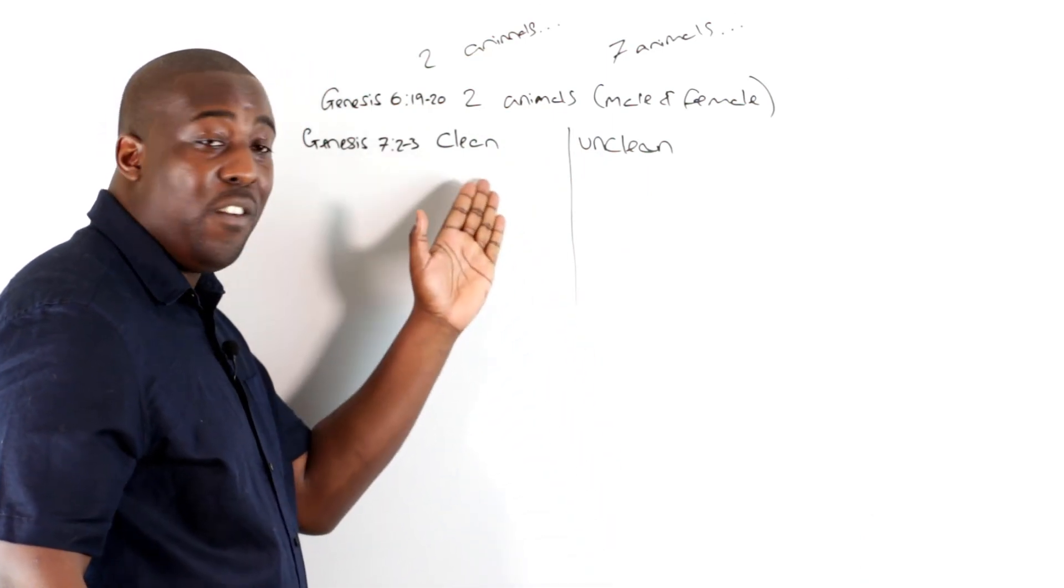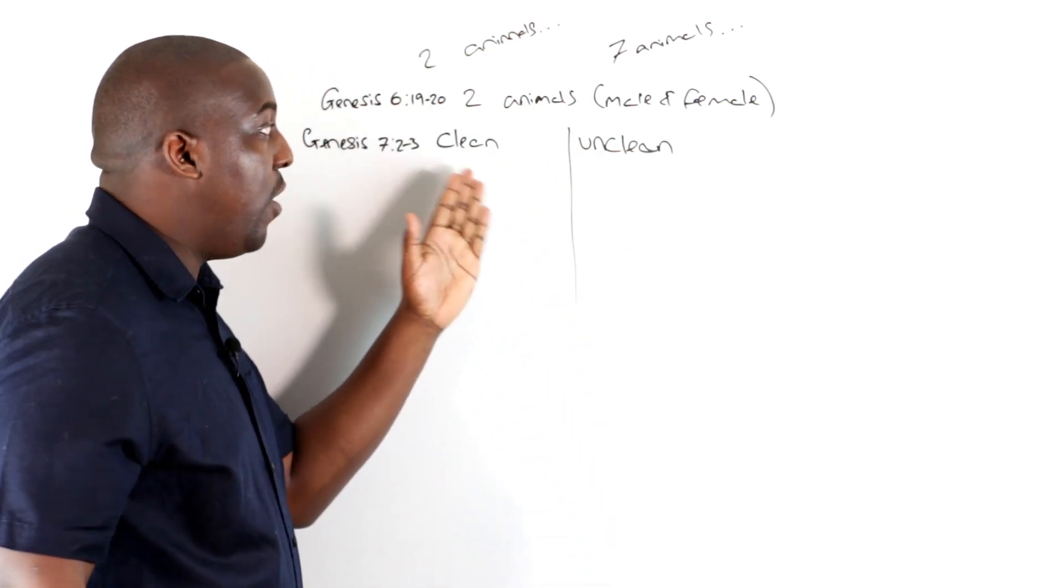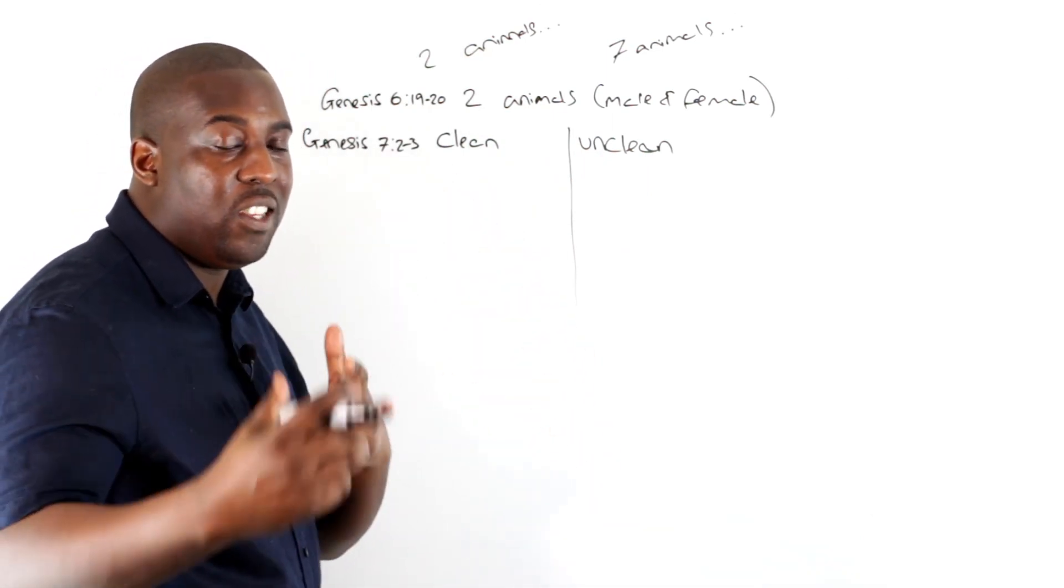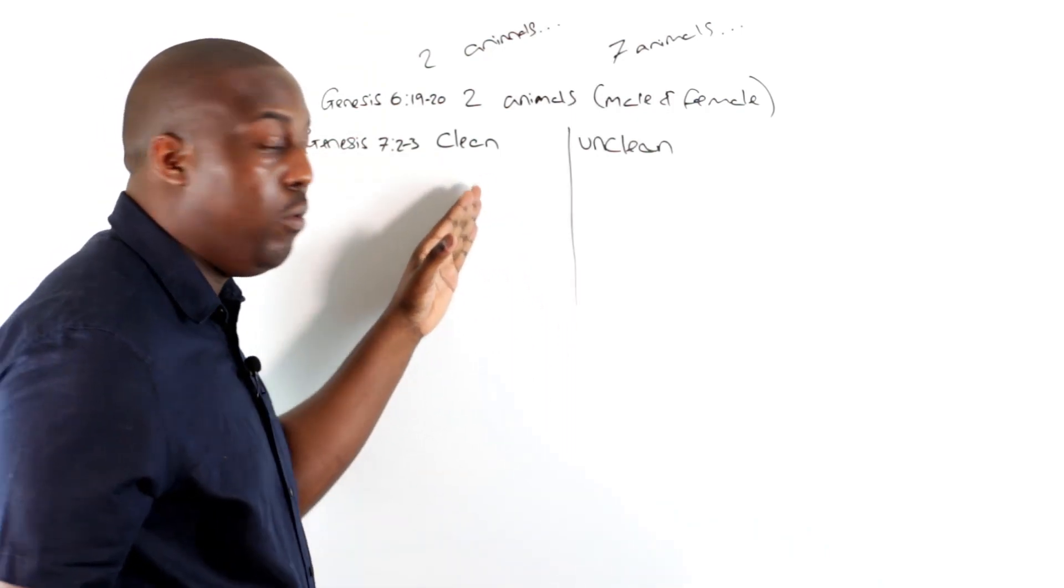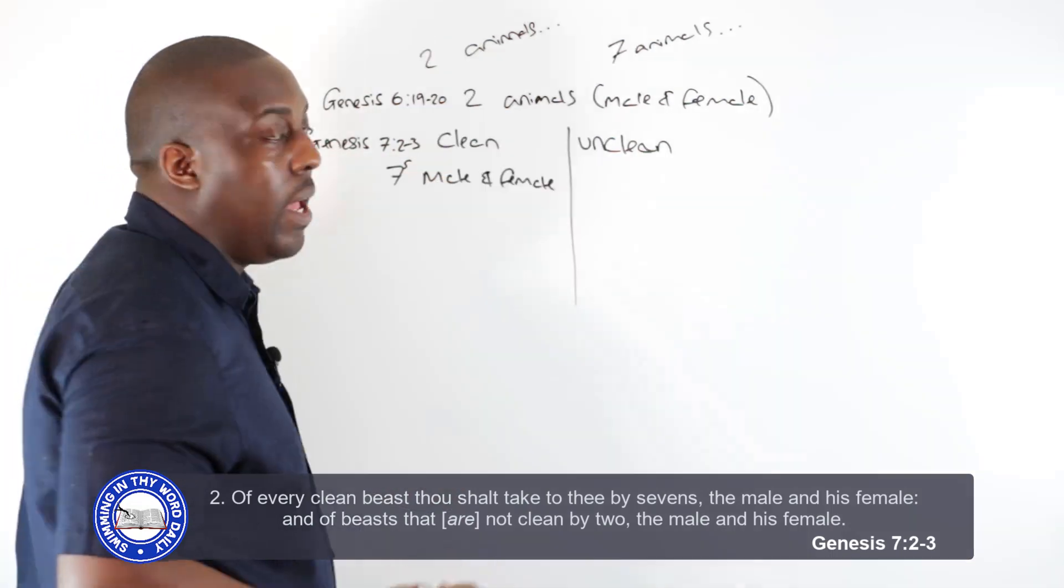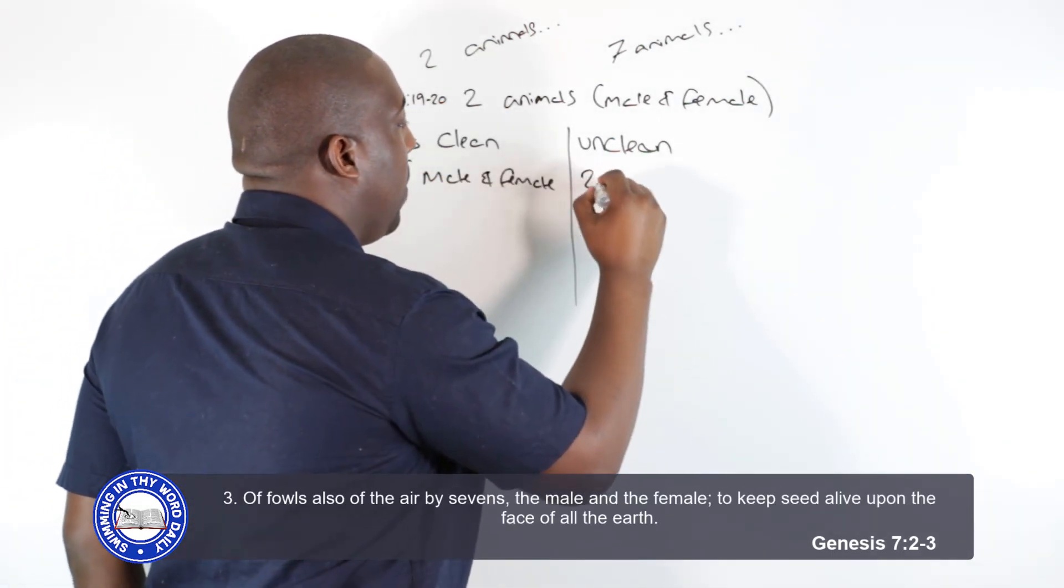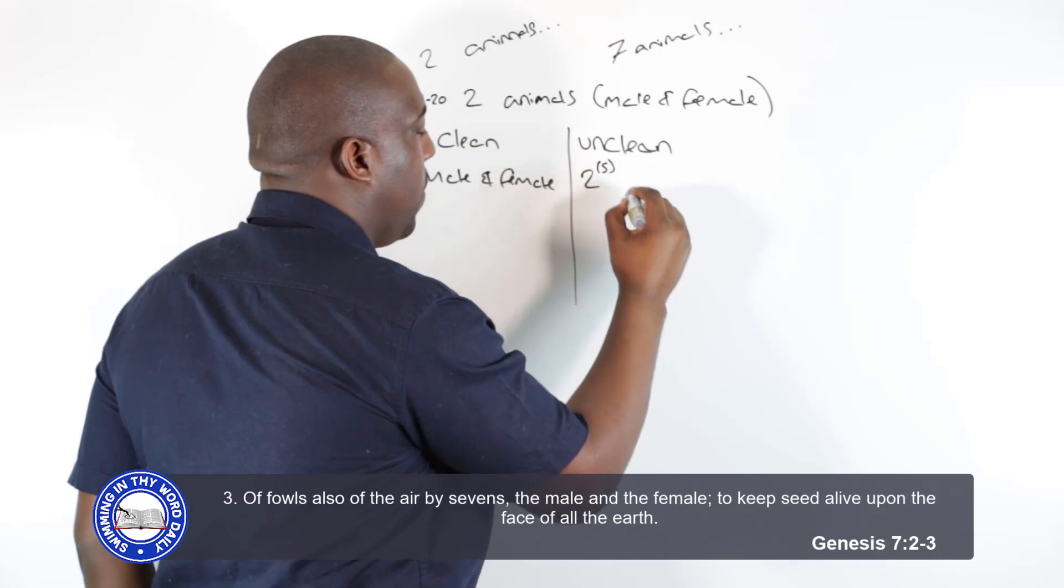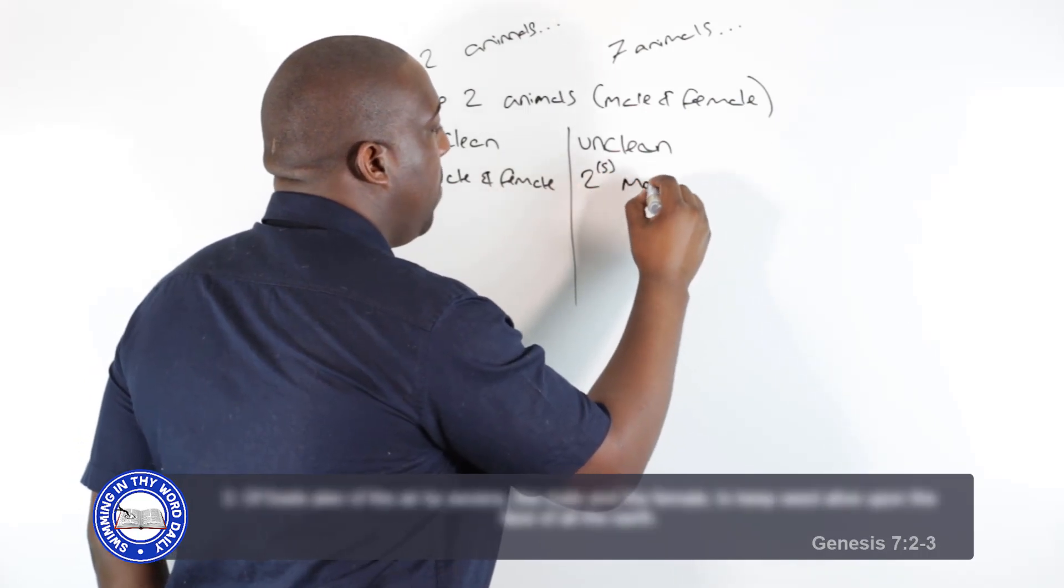We basically see that in the very next piece of text in Genesis, where God basically goes on to further give insights where he says, of clean animals, I want you to take in by sevens, the male and female, and the unclean animals, he says, I want you to take in by two, male and female.